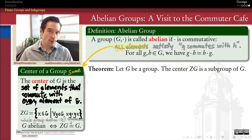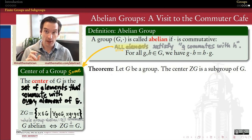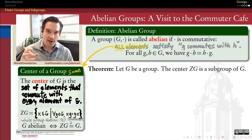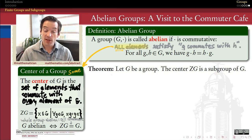So if groups don't have the commutative property in general, we can't always trade the order of operations on any pair of elements. When we can, we call the whole group abelian, but when we can't, can we find smaller contexts in which that is true? So if there are places in abstract algebra where we do need to speak about the commutativity of elements, we kind of have two options.